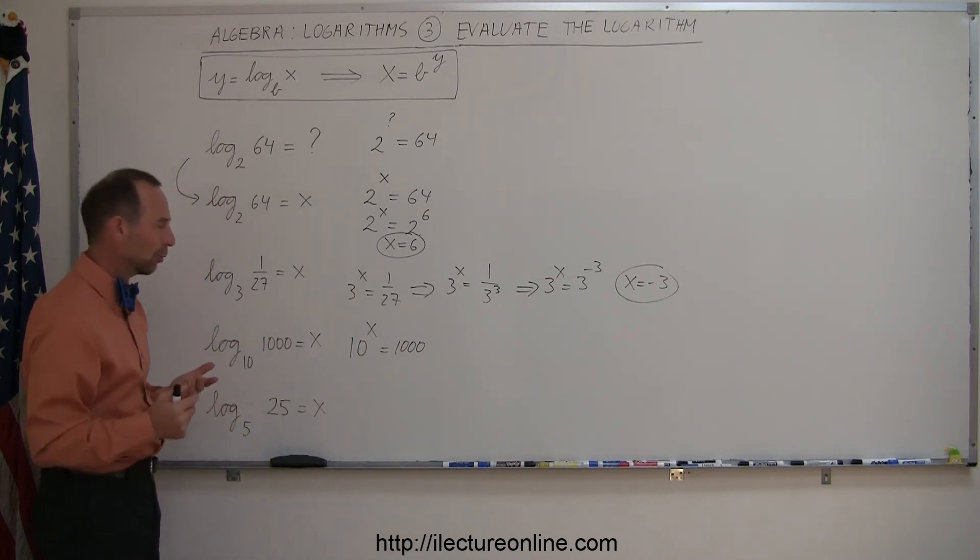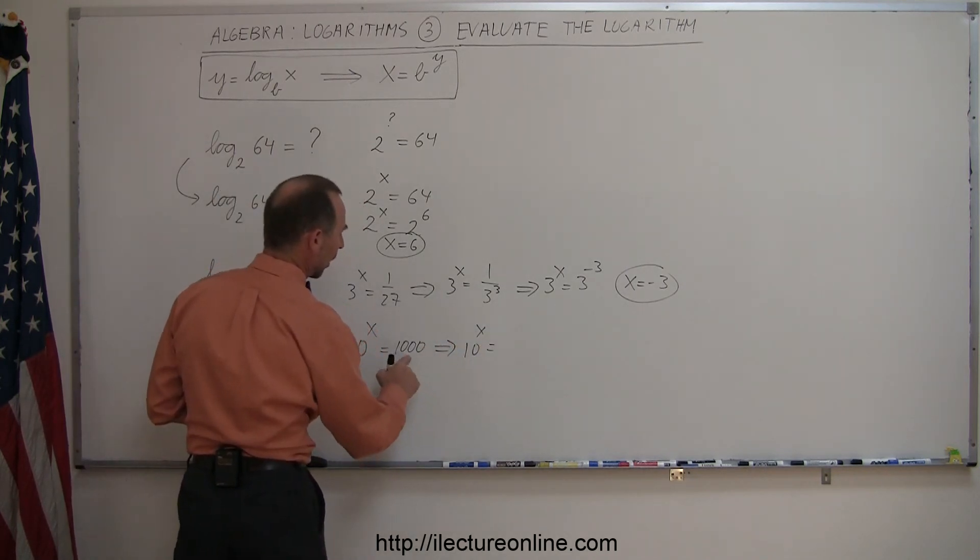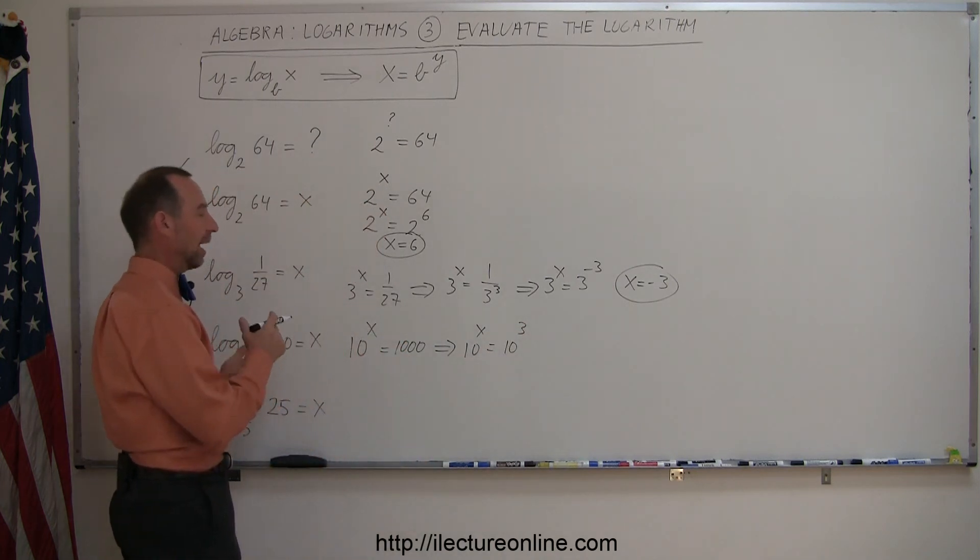And at this point you can almost see it just like that but again the idea is that 10 to the x power is equal to, 1,000 can be written as 10 to the third power. And therefore you can see yes, x equals 3.